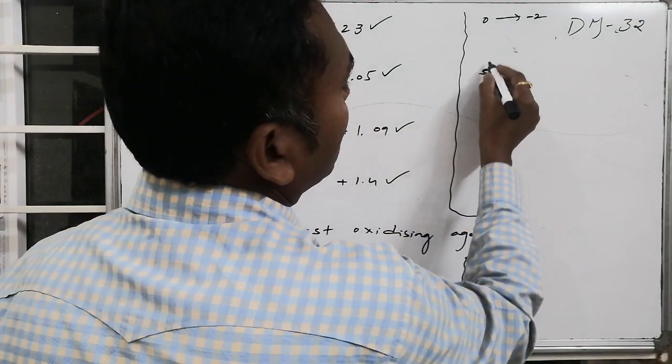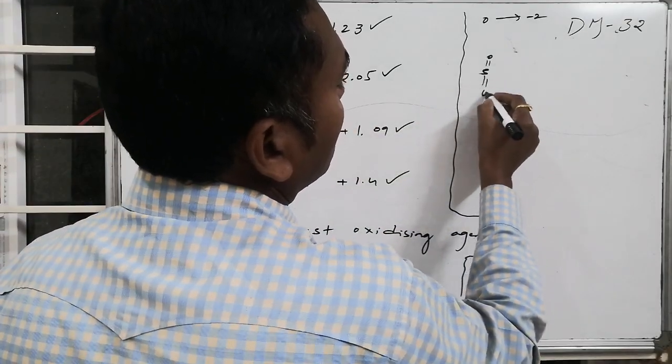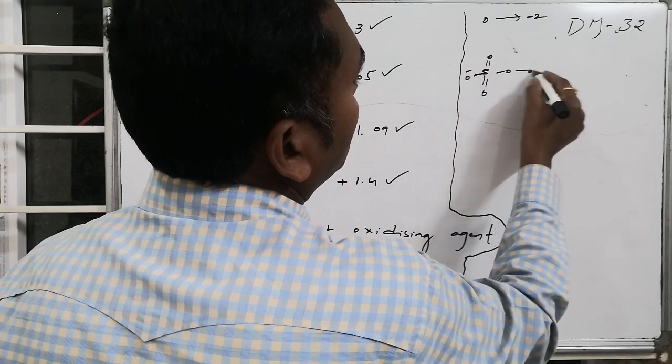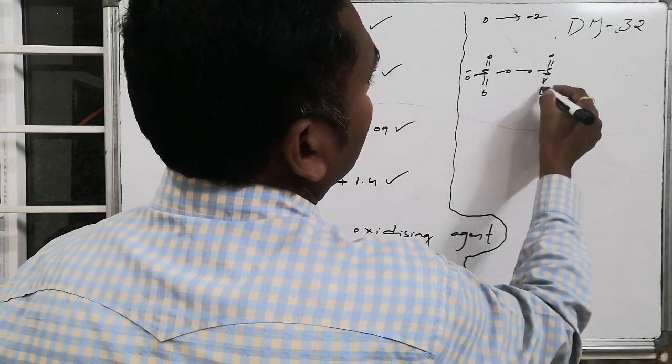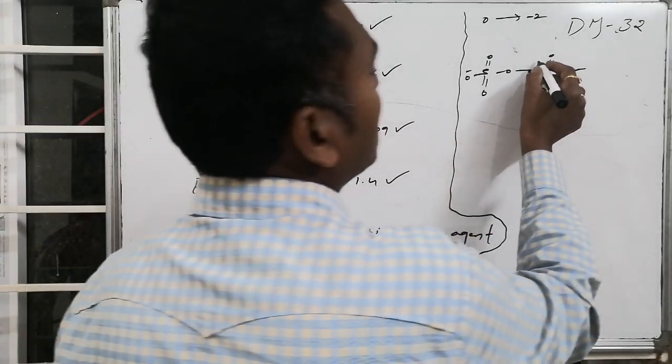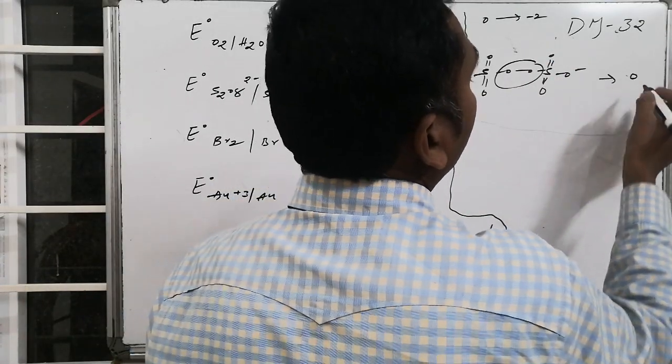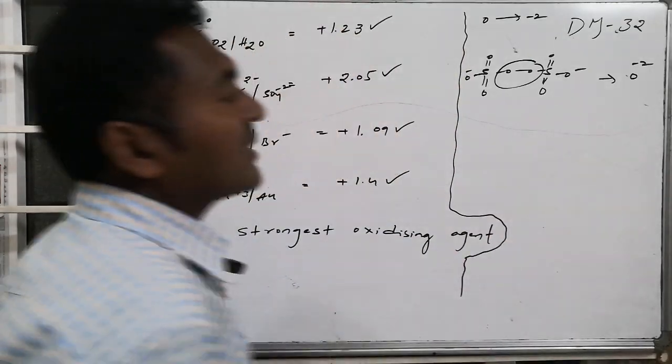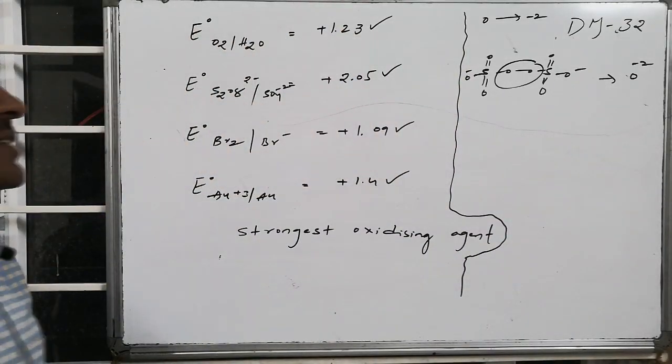In S2O8 2 minus, the peroxide bond is present. This peroxide is converted, and the oxygens go from minus 1 to minus 2. Hence, it is also reduction.